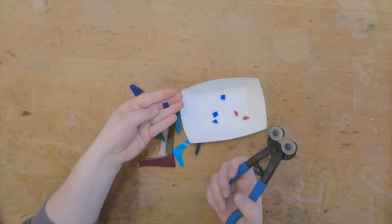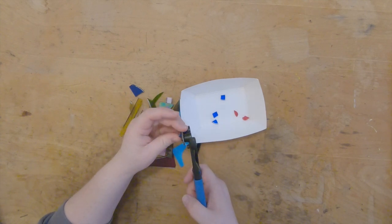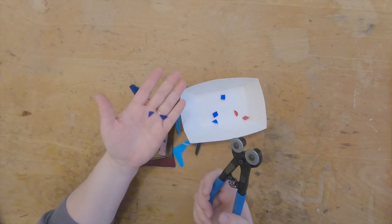If you take a square and go diagonally, then you have triangles.